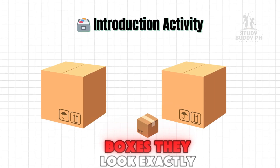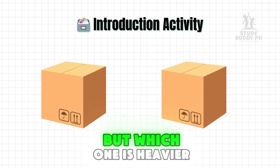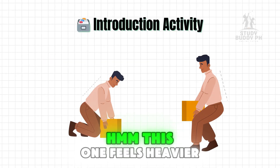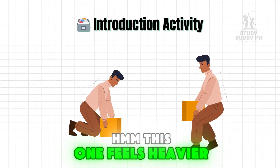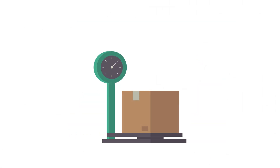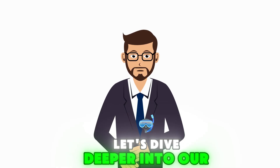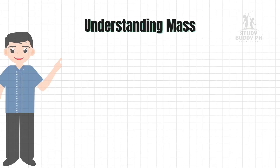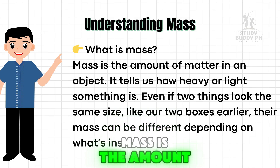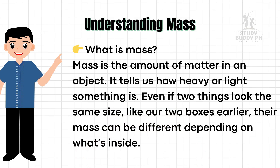I have here two boxes. They look exactly the same, but which one is heavier? Hmm, this one feels heavier — but how can I be sure? That's right, by measuring its mass. Mass is the amount of matter in an object. It tells us how heavy or light something is. Even if two things look the same size, like our two boxes earlier, their mass can be different depending on what's inside.